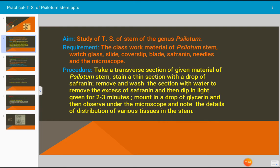Then again remove from the light green and mount in a drop of glycerin. This is a temporary slide preparation. Stain is used to differentiate the cells which are present inside the stem. We have to observe this temporary slide under the microscope and write down all the details about the distribution of tissue inside the stem of Psilotum.